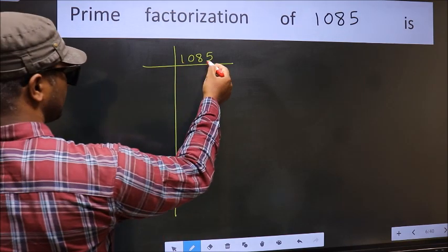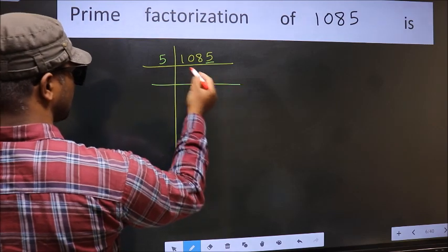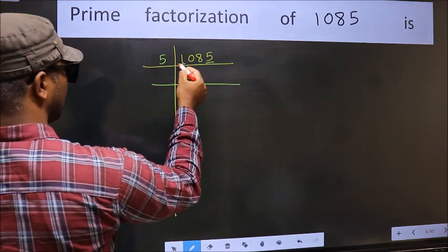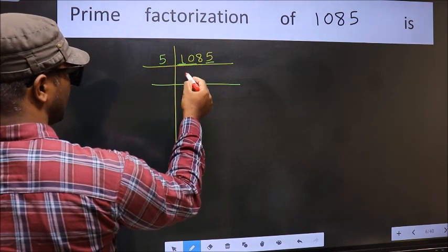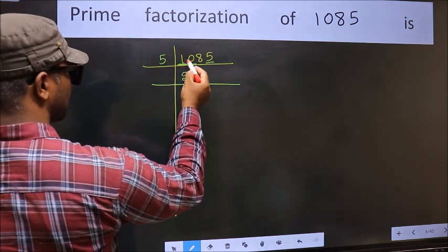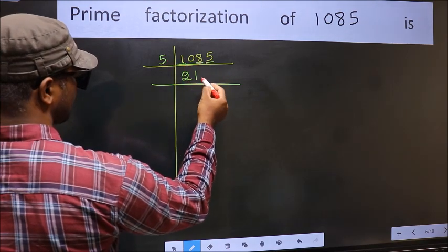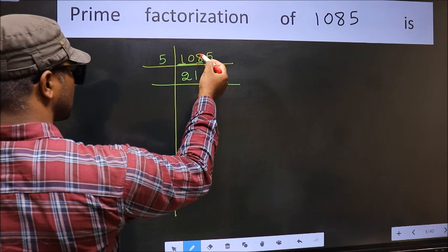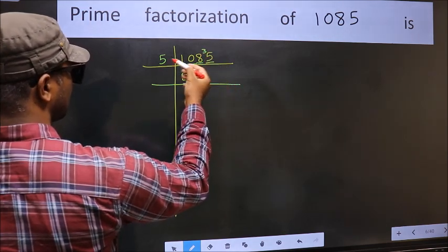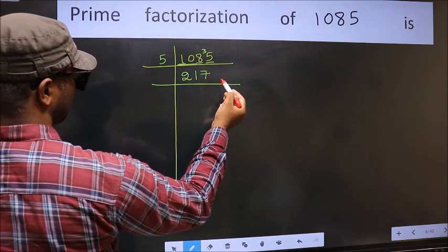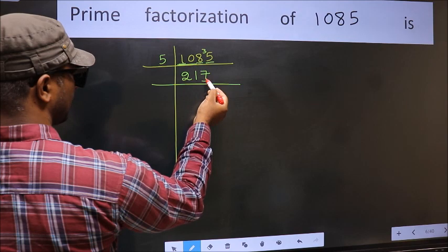For this number, last digit is 5, so directly take 5. First number 1 is smaller than 5, so take 2 numbers: 10. When do we get 10 in 5 table? 5 times 2 is 10. The other number 8. A number close to 8 in 5 table is 5 times 1 is 5. 8 minus 5 is 3, carried forward 35. When do we get 35 in 5 table? 5 times 7 is 35.